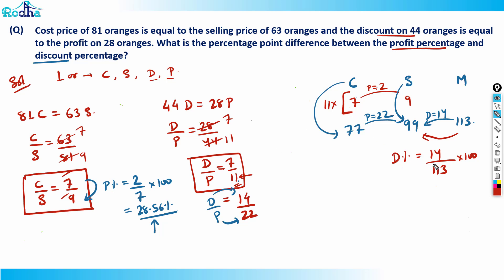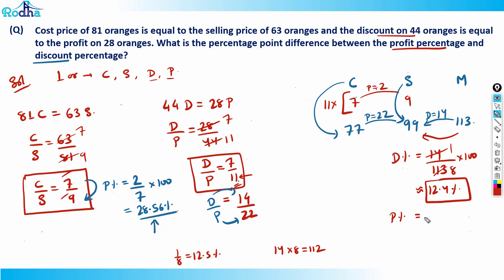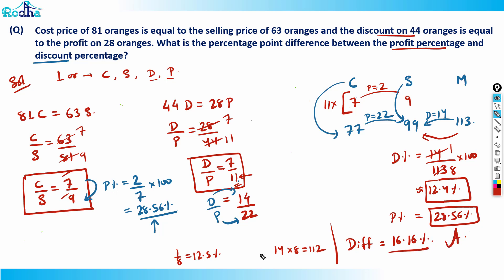To approximate 14/113 × 100: 14 × 8 = 112, which almost equals 113, so it's just above 1/8. Since 1/8 = 12.5%, and the denominator is slightly more than 112, the discount percentage is slightly less than 12.5%, roughly 12.4%. Profit percentage is 28.56%. So the required percentage point difference is 28.56 − 12.4 = approximately 16.16%. That's the answer.